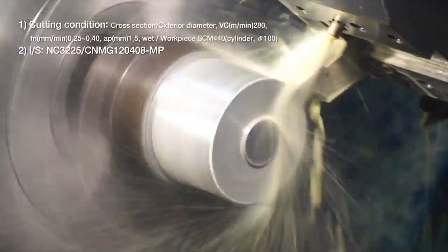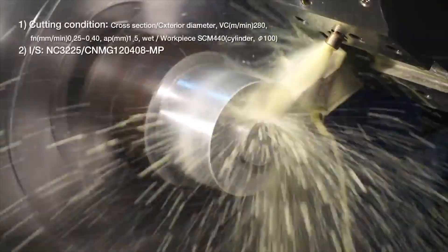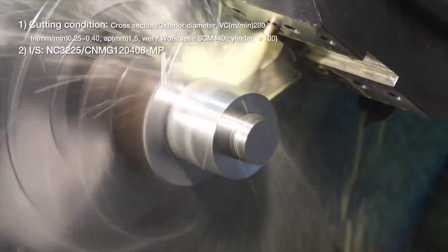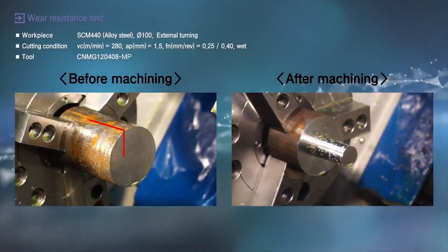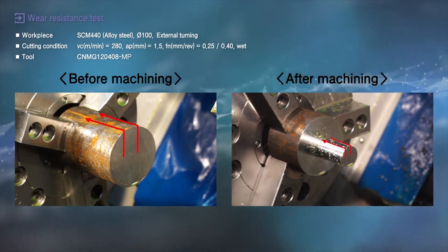From the wear resistance test of face and exterior diameter of alloy steel, the new medium cutting chip breaker for NC3225MP continually demonstrates superior wear resistance over all products of competitors we face.